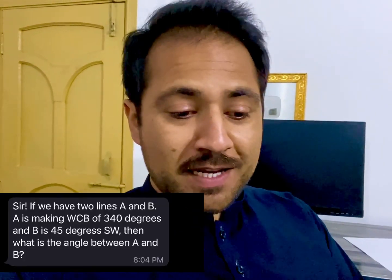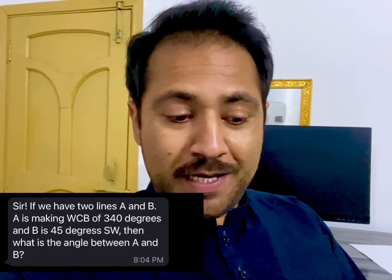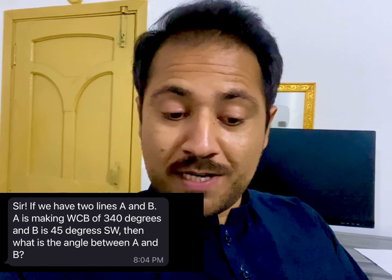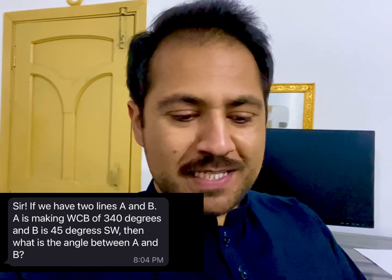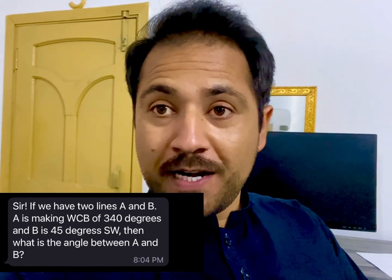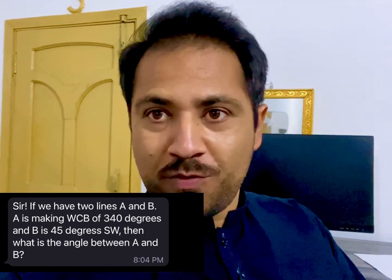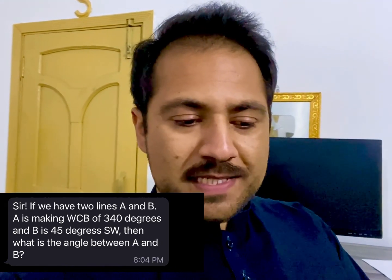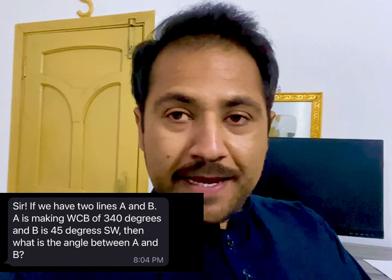Alright, someone's asking if we have two lines A and B, A is making whole circle bearing of 340 degrees, where B is 45 southwest, then what is the angle between A and B?